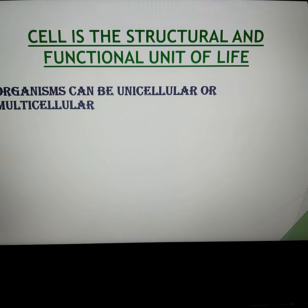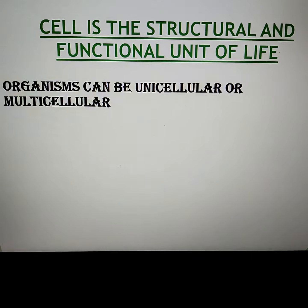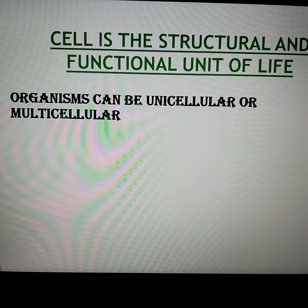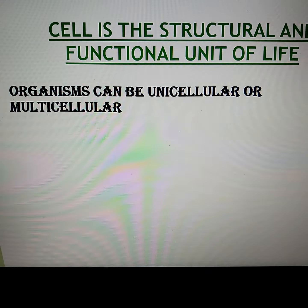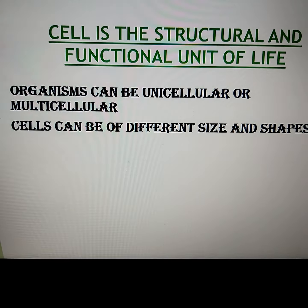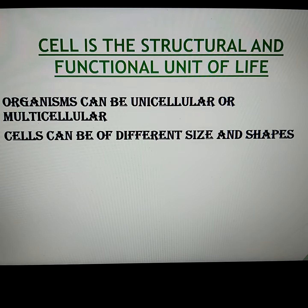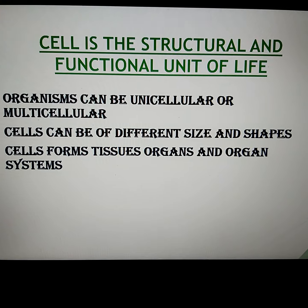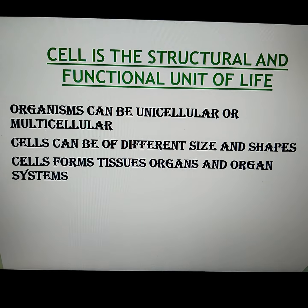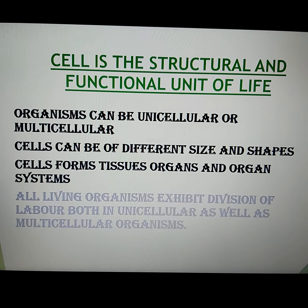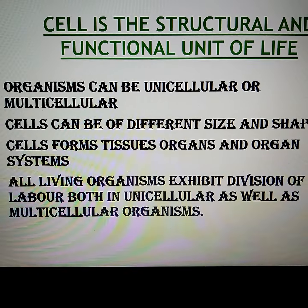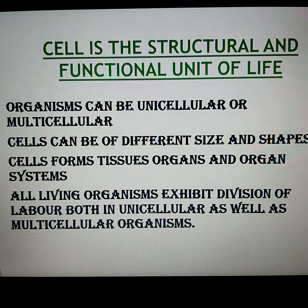A few more basics. Organisms can either be unicellular or multicellular based on the number of cells present. If the organism is made up of just one cell it is unicellular, and if it is made up of many cells it is multicellular. Cells can be of different sizes and shapes to match the function they are performing. Cells form tissues, organs, and organ systems, and all living organisms will exhibit division of labor.